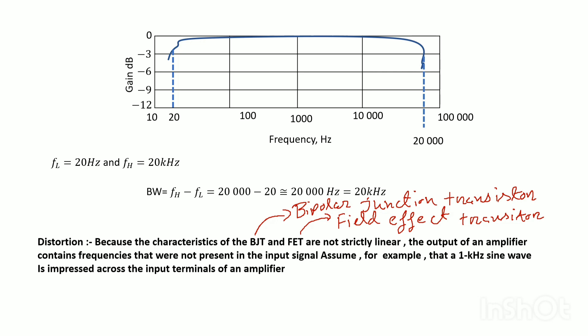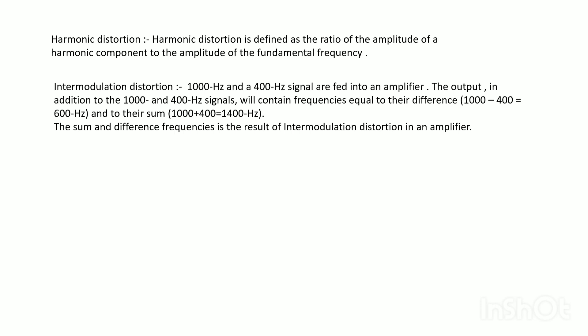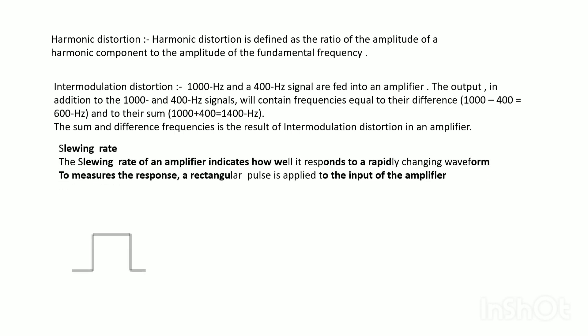I discuss distortions: harmonic distortion and intermodulation distortion. Harmonic distortion is defined as the ratio of the amplitude of a harmonic component to the fundamental frequency. Intermodulation distortion: a 1000 Hz and 400 Hz signal are fed into an amplifier. The output, in addition to the two frequencies, will contain frequencies equal to their difference (1000 - 400 = 600 Hz) and to their sum (1000 + 400 = 1400 Hz). The sum and difference frequencies is the result of intermodulation distortion.